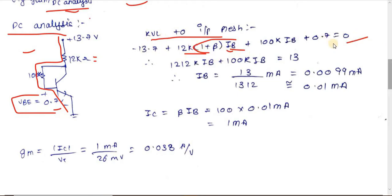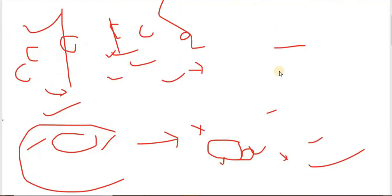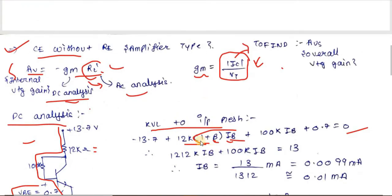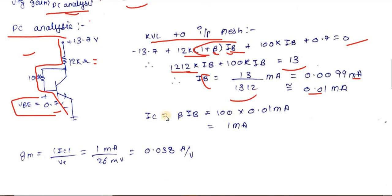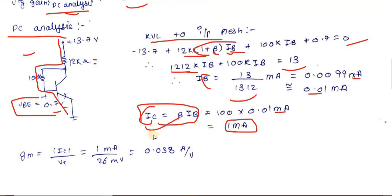Solving, Ib = 13/1312k ≈ 0.0099 mA ≈ 0.01 mA. Then Ic = β×Ib = 100 × 0.01 mA = 1 mA. DC analysis is complete.